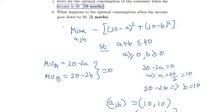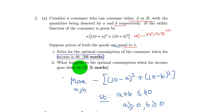Now we see the second part of the question. The second part of the question says what happens to his optimal consumption when his income goes down to 10.